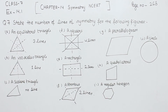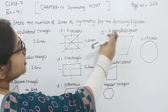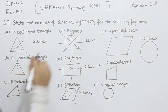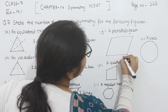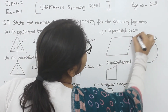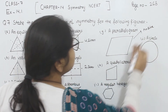Now, come to the next part — part G. This is a parallelogram. In the parallelogram, if we fold this one, we can't get equal sides. So in this figure, we cannot have a line of symmetry. For the parallelogram, we have no line of symmetry.